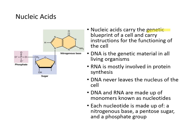Nucleic acids are the genetic blueprint of the cell and carry instructions for its functioning. DNA is the genetic material for all living organisms. RNA is involved in protein synthesis. DNA never leaves the nucleus of a eukaryotic cell. Both DNA and RNA are made up of monomers known as nucleotides.